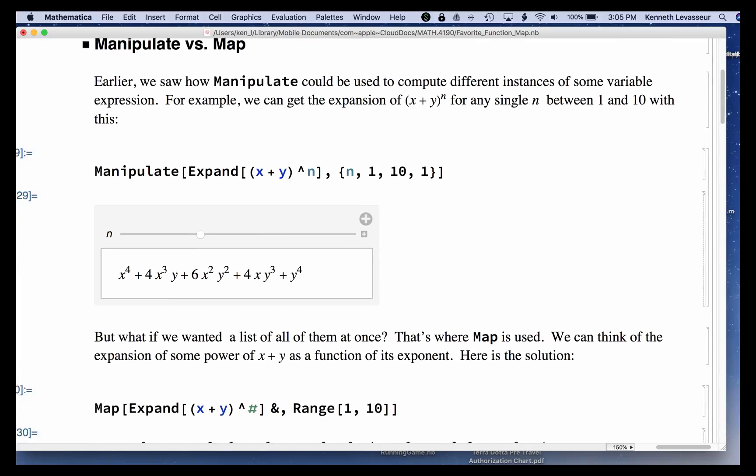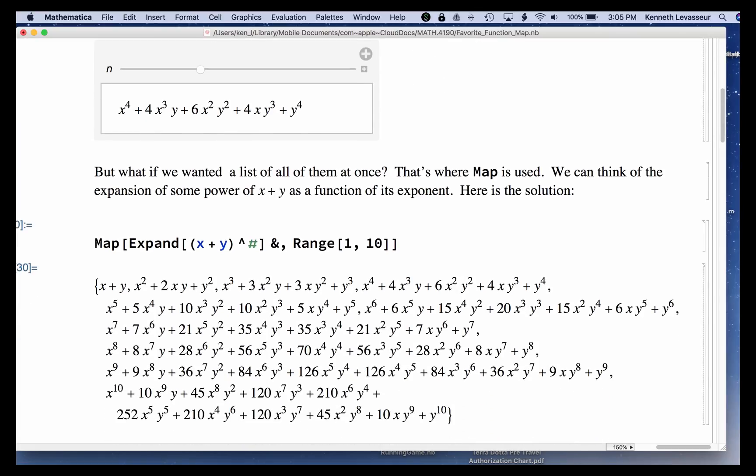In that case, you'd use Map. So here's the example. Same expression. Now, instead of the expression with a variable n, we turn that same expression into a pure function. So n is replaced with the hash mark and the ampersand at the end. So this expression here is a function.